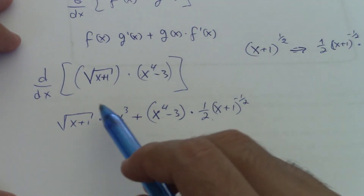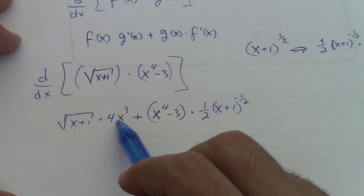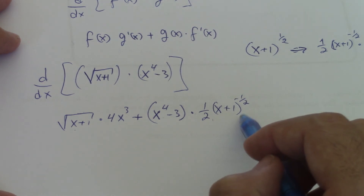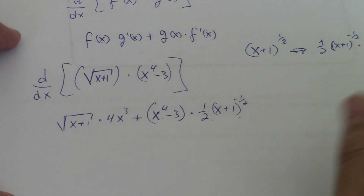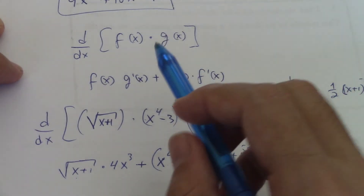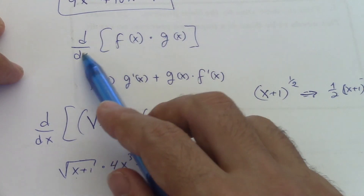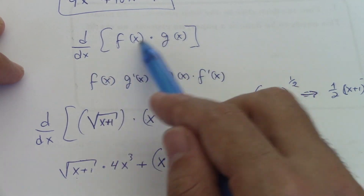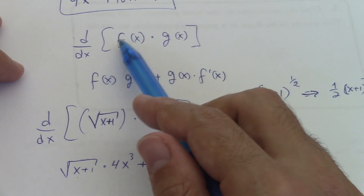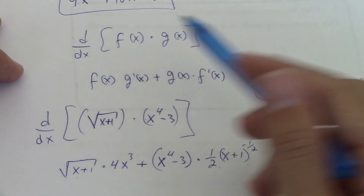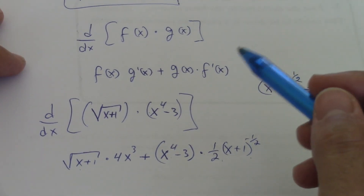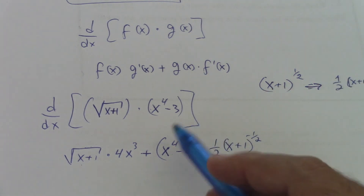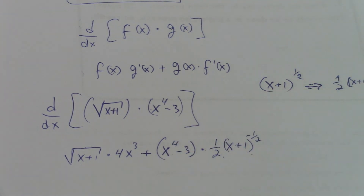So the product rule is: the first one times the derivative of the second one, plus the second one times the derivative of the first one. That's the product rule we use when we are multiplying two functions and want to find d/dx, or the derivative with respect to the variable. Remember that it doesn't always have to be f(x) or g(x) — it could be s(t). We find the derivative with respect to t a lot in many word problems. I hope this video helped you and have a wonderful day.